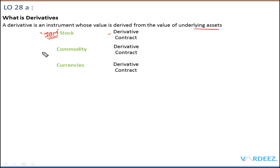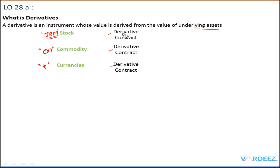We can also have a derivative contract on a commodity like oil — prices of oil going up and down will also lead to prices of this derivative contract going up and down. We can also have a derivative contract on currencies, like dollars, where fluctuations in the dollar drive the derivative. Essentially, the derivative contract does not have its own value; it derives its value from the underlying asset, which can be a stock, a commodity, currencies, or even weather — yes, weather derivatives exist.